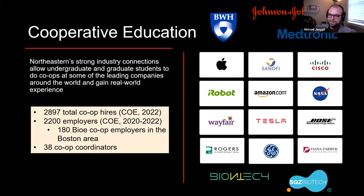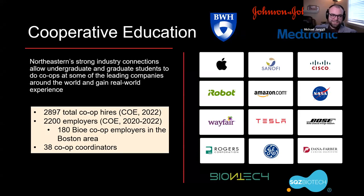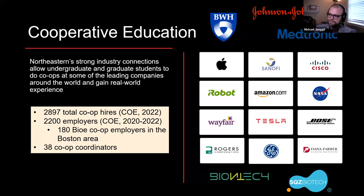Here are some of the employers we have relationships with. We had close to 3,000 total co-op hires last year from 2,200 different employers. There is not a better city in the United States to do a bioengineering co-op than Boston — perhaps San Francisco, but that's a bit of a flight. We're blessed with a multitude of top-notch world-class companies less than five miles away. We have 180 co-op employers in this area and a very large network of 38 co-op coordinators.